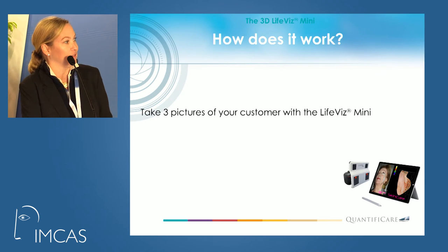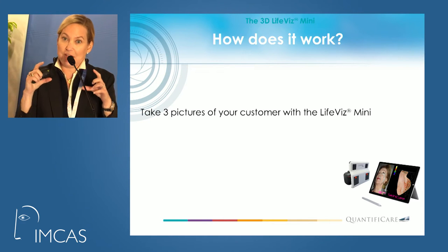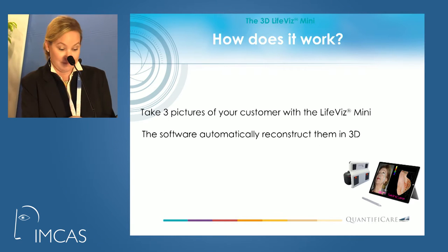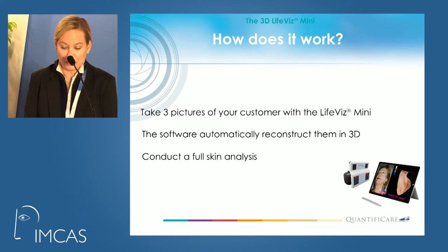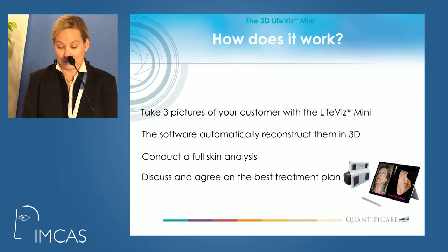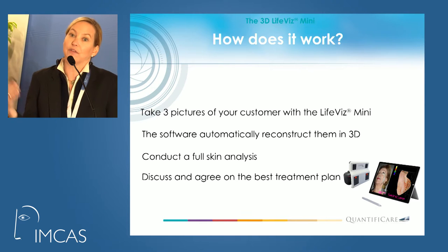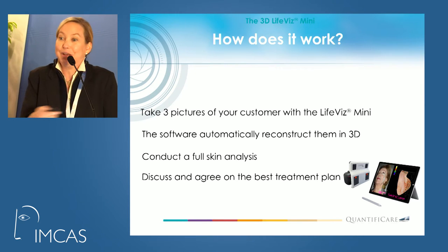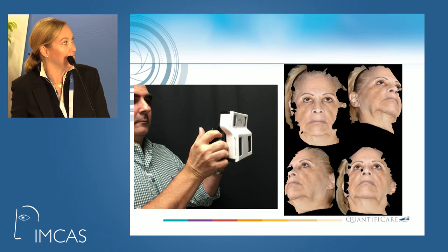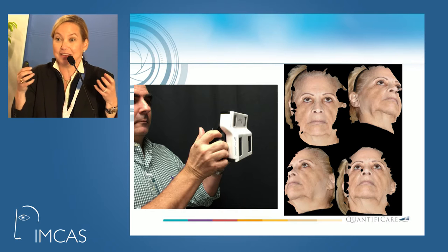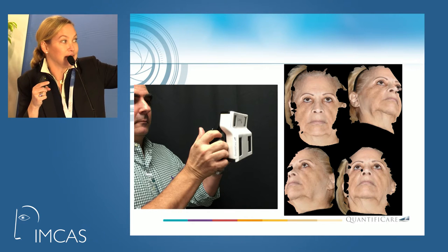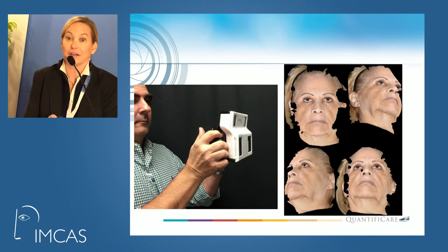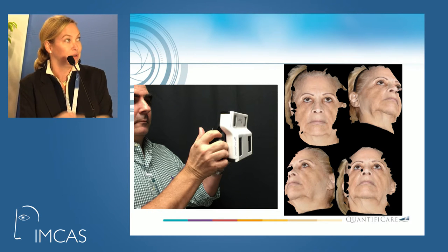So how does this camera system work? With the Quantificare 3D camera system, you take three pictures of your subject — it's small, one, two, three, very quick. Three seconds, and it can be taken in any room. The software automatically reconstructs them into a 3D image, and then you can conduct a full skincare analysis and discuss a treatment plan, or if you're doing studies, take very good before and afters, or even great before and afters for lectures. This is actually my research coordinator, and that's the camera system — it fits in your hand. You take three shots at different angles and it lines everything up for you. The computer system reconstructs it into a 3D image. Honestly, the whole process might be three to five seconds with the camera.